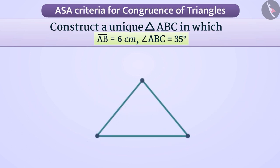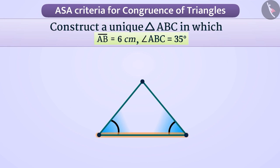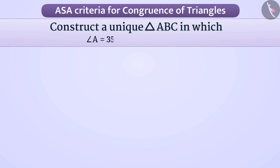Now, if we know the measurement of two angles and the length of the side included between them, then we can definitely produce a unique triangle. Suppose we are given angle A is equal to 35 degrees, angle B is equal to 75 degrees, and AB is equal to 6 cm. Then we can easily form a unique triangle ABC.